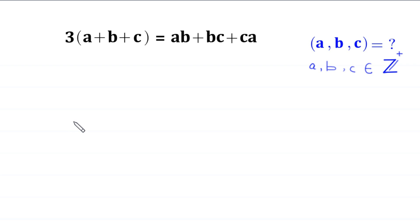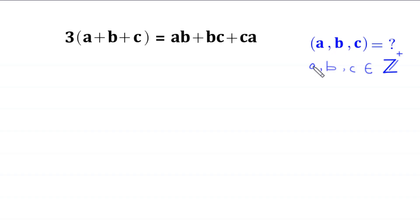Hello everyone, you are welcome to how to solve this very nice Diophantine equation: three times a plus b plus c is equal to ab plus bc plus ca. Our job is to find all possible values of a, b, and c such that a, b, and c are positive integers.